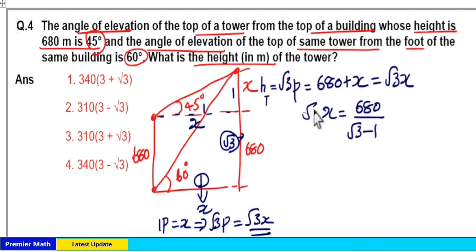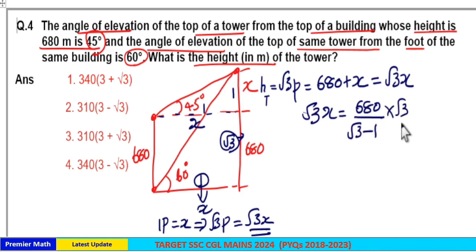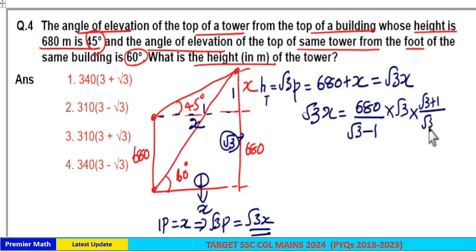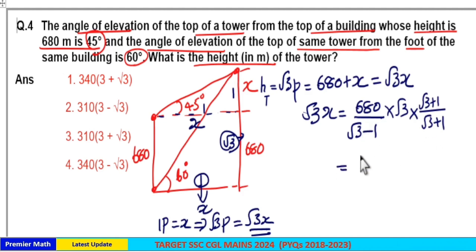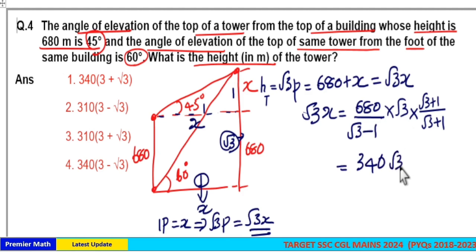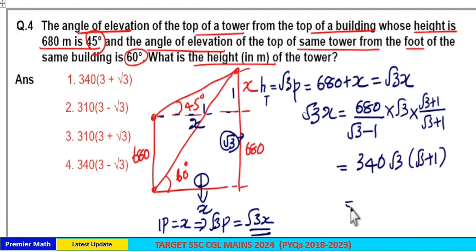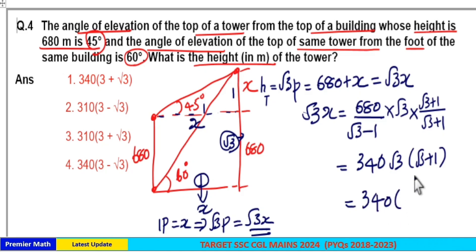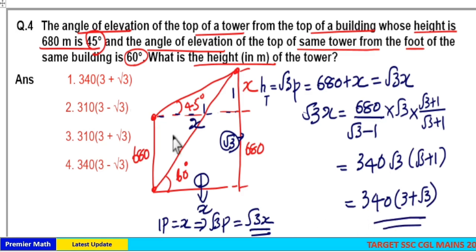The height of the tower is root 3 x, so it equals 680 divided by (root 3 minus 1) multiplied by root 3. To rationalize, multiply by (root 3 plus 1) divided by (root 3 plus 1). Since (root 3 minus 1)(root 3 plus 1) equals 3 minus 1 equals 2, and 680 divided by 2 is 340, the height equals 340 into (3 plus root 3). So the answer is option 1.